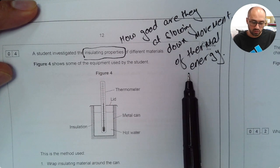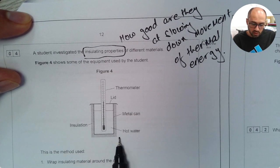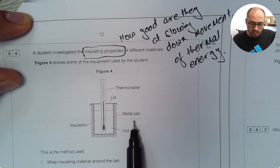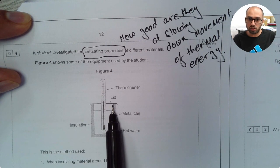In order to determine this they're using this setup. So they've got a thermometer, they've got insulation around a metal can, this metal can is filled with hot water and there is a lid placed on top of it.